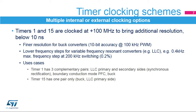Timers 1 and 15 are clocked by PLLQ clock, which can have a frequency higher than 100 MHz. It ensures fine resolution for buck converters and lower frequency steps for variable frequency resonant converters, such as an LLC. Timer 1 has three complementary pairs, which is appropriate to support primary and secondary sides in LLC, as well as boundary conduction mode in power factor correction and buck converters. Timer 15 has a unique complementary pair, which can be used in buck power supplies and LLC primary side converters.